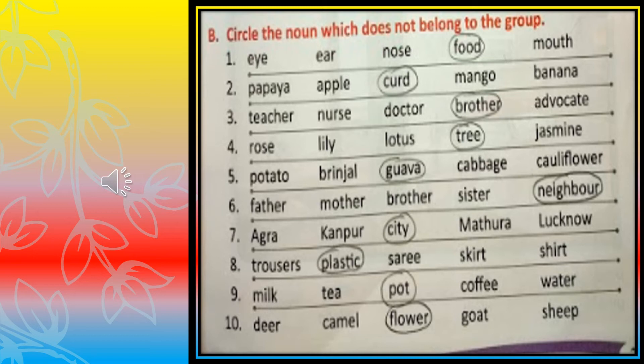Papaya, apple, curd, mango, banana — all are names of fruits, but curd is from a different category; it is a dairy product, so we will circle it. Teacher, nurse, doctor, brother, advocate — teacher, nurse, doctor and advocate are all professions, but brother is a relation, so brother does not belong to the group and we will circle it.